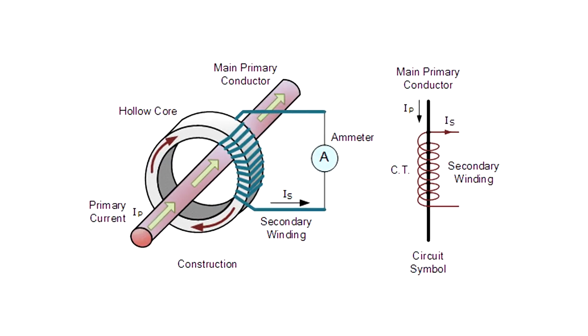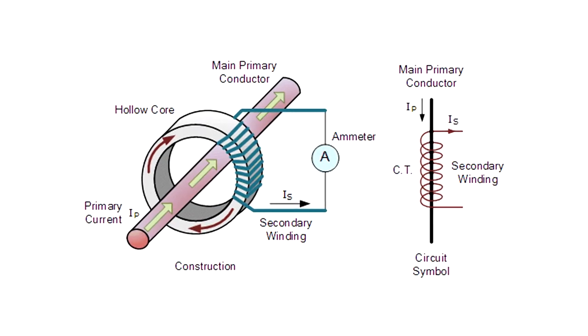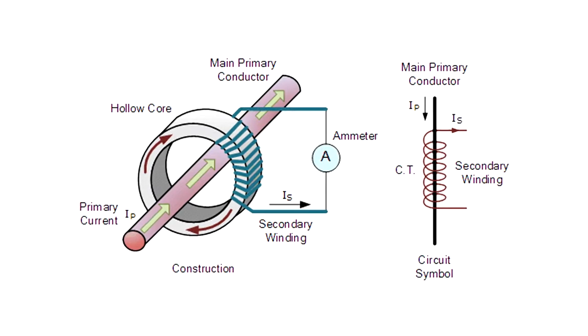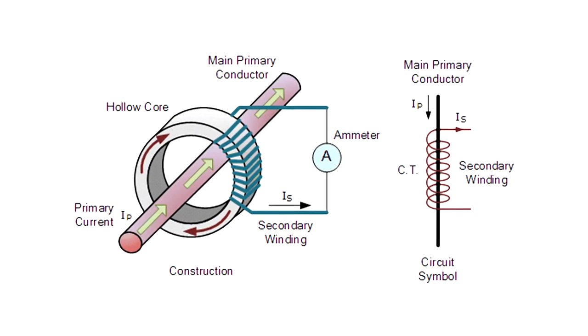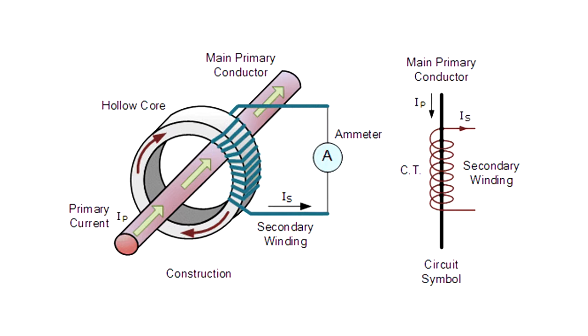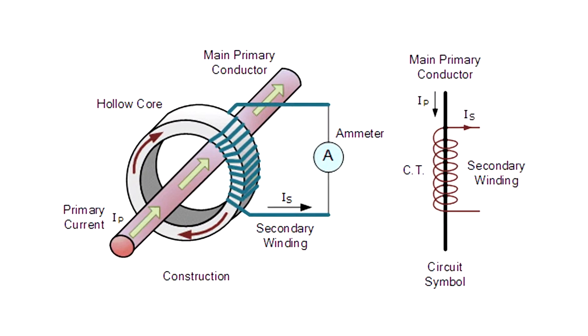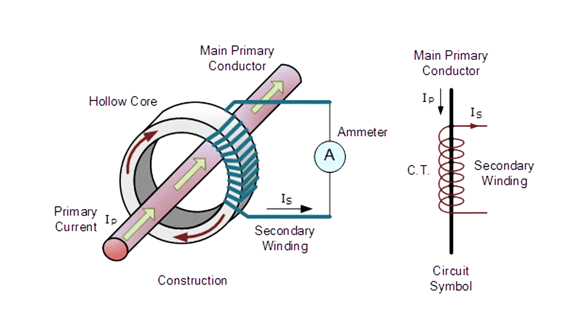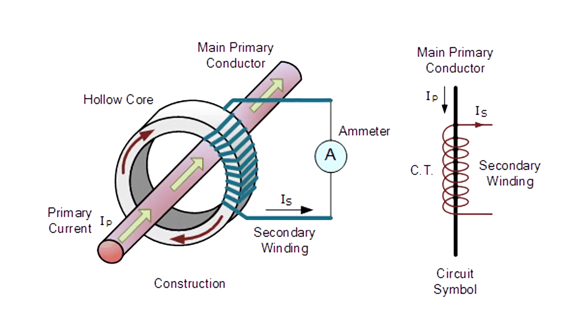The secondary winding is located inside the jaws of the current clamp. Due to a changing magnetic field from the alternating current on the primary side, a current is induced in the secondary winding, which is a current proportional to the primary current.